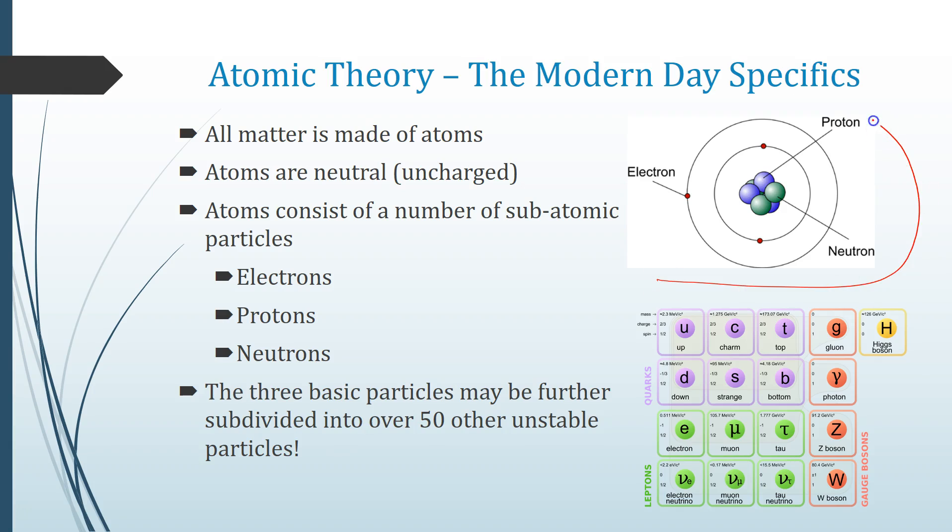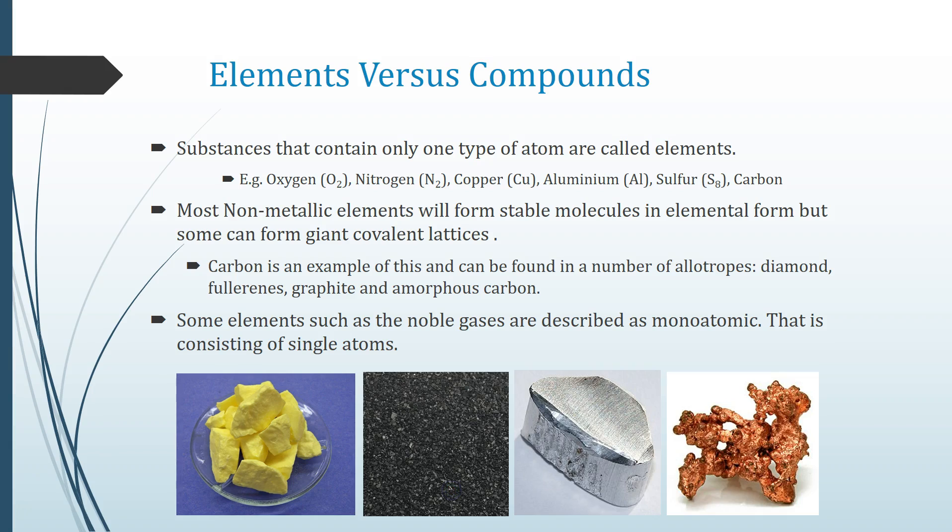There is a world of different subatomic particles beyond this that really is the realm of particle physics, where there are over 50 different unstable particles including bosons, quarks, leptons, and neutrinos. But we don't tend to look at that in chemistry; that goes beyond what we need to really explain the properties of materials.